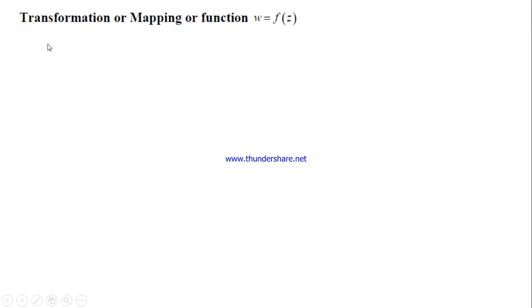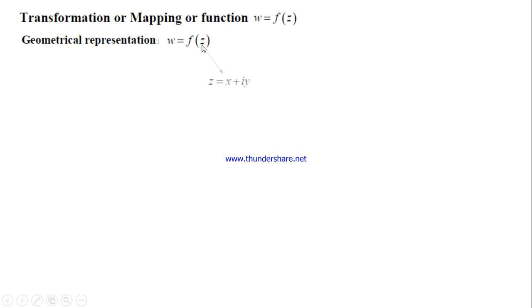We are in module 2 discussing transformation, or mapping, or function w equal to f of z. We know that w = f(z) is a rule which associates each z taken from the domain to a unique w in the co-domain. To represent this function geometrically, we need a four-dimensional region since z involves x and y, and w involves u and v. So we use two planes to represent the function w = f(z).